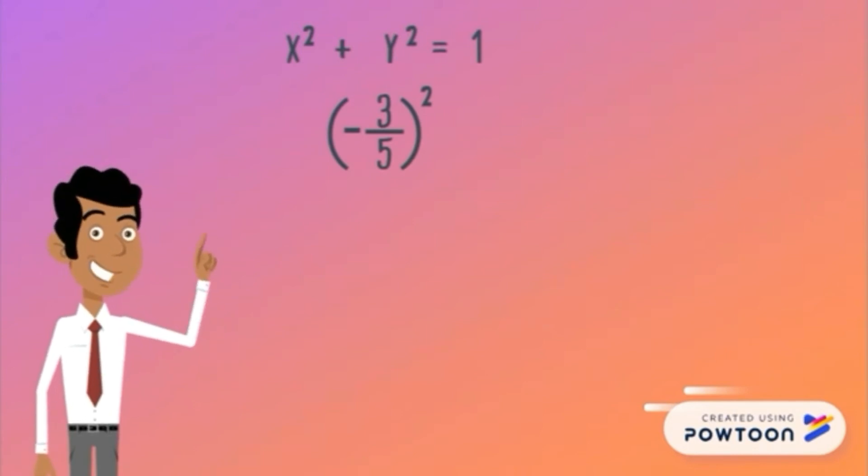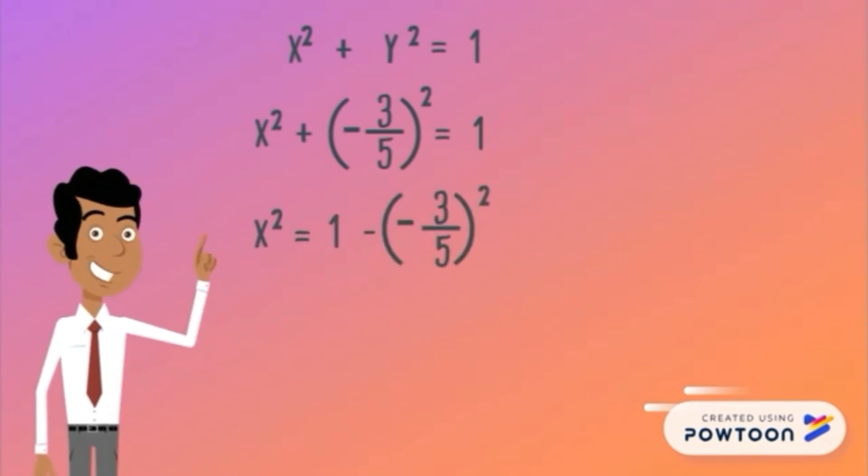Our equation is x squared plus negative 3 over 5 quantity squared equals 1. The next step is to transpose negative 3 over 5 quantity squared to the right side. Thus, the equation becomes x squared equals 1 minus negative 3 over 5 quantity squared. After we evaluate the equation, we end up with 4 over 5.